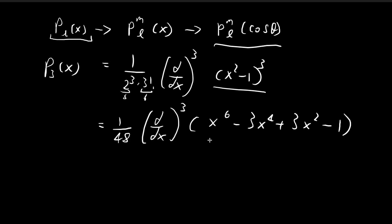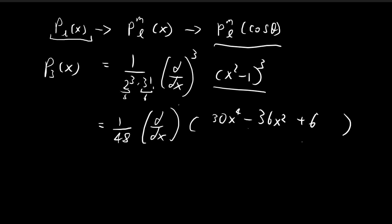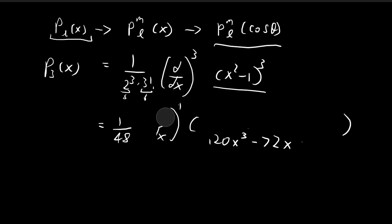Differentiating once gives 6x⁵ − 12x³ + 6x. Differentiating a second time gives 30x⁴ − 36x² + 6. Differentiating a third and final time gives 120x³ − 72x.